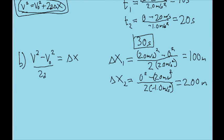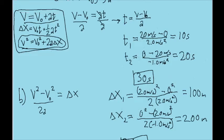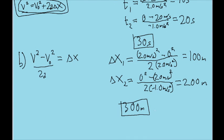So just like we did for part A of this problem, we're going to add those two distances together to get 300 meters. So that means that throughout the entire motion described by the problem, the car traveled a total of 300 meters. So that is our solution to both part A and part B.